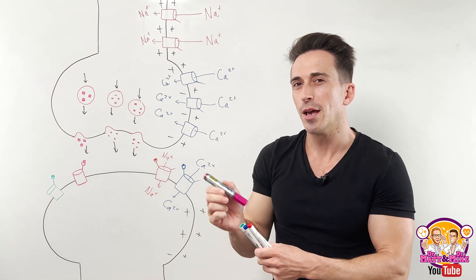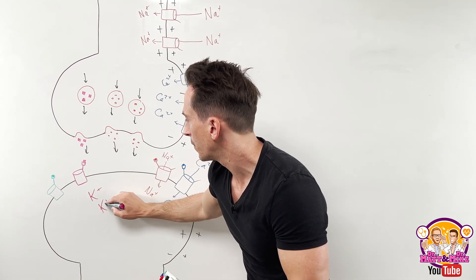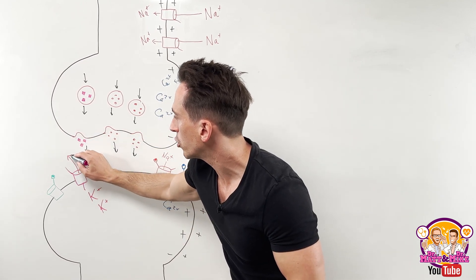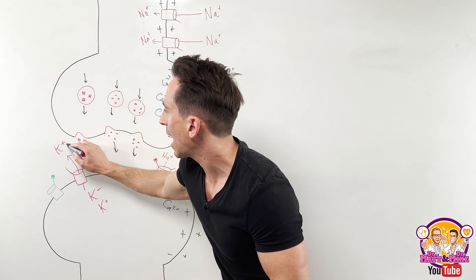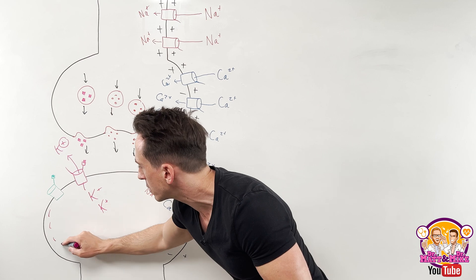Most of our positive potassium sits inside the cell. If you open a potassium channel, that potassium will want to go down its concentration gradient and go outside, carrying that positive charge with it, making it even more negative inside the cell.